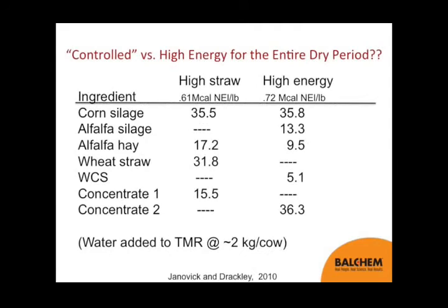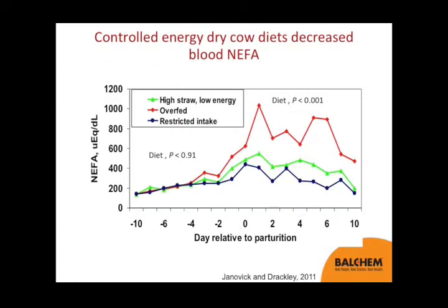In this particular experiment, they fed a high straw diet — the controlled energy diet at about 0.61 Mkcal NEL per pound — and also a high energy diet formulated at around 0.72 Mkcal NEL per pound fed ad libitum, plus a third treatment restricting energy intake by limiting the amount of feed offered. This is characteristic of many controlled energy diet studies run at the University of Illinois.